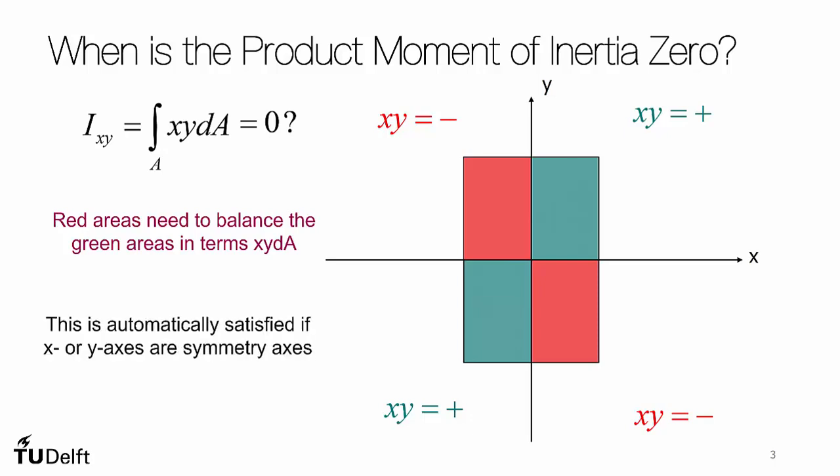This is automatically satisfied if the x or the y-axis are symmetry axes, and they pass through the centroid, which is a requirement for placement of a coordinate system within a cross-section for our problems anyways.